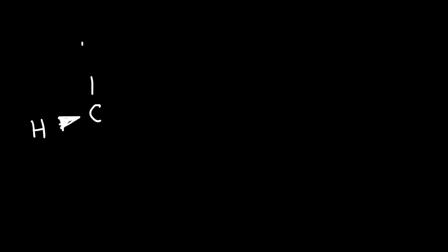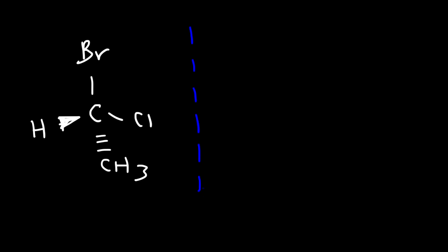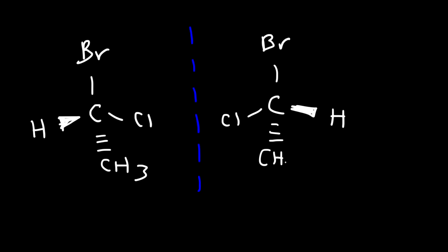Here's another example. Go ahead and draw the enantiomer for this molecule. Let's draw the mirror first. This time the chlorine is going to be facing the left side as opposed to the right side, and then we have the bromine at the top. The hydrogen is facing away, and then we have the methyl group.